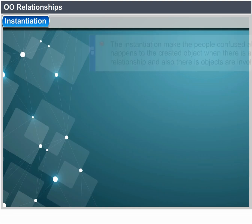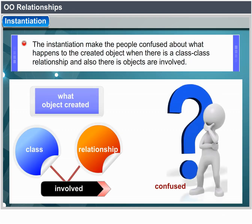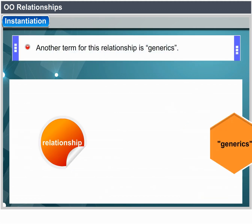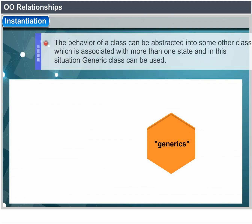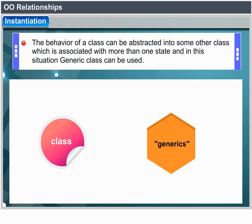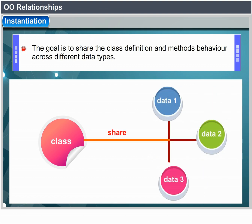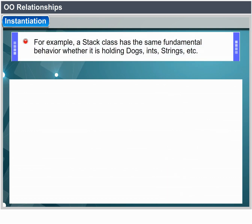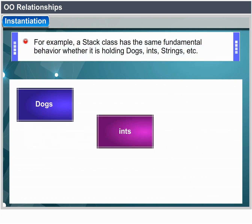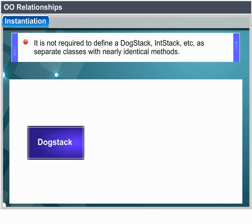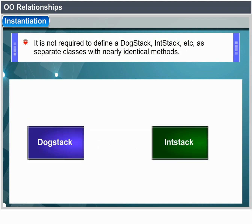Instantiation: the potential confusion for newcomers to OO is that instantiation creates an object, yet this is a class-to-class relationship — no objects are involved. Another term is generics. A generic class arises when the behavior of a class can be abstracted to be relevant to more than one type of state, sharing method definitions across different data types. For example, a stack class has the same fundamental behavior whether holding documents, integers, strings, etc. — we shouldn't have to define separate classes with nearly identical methods.